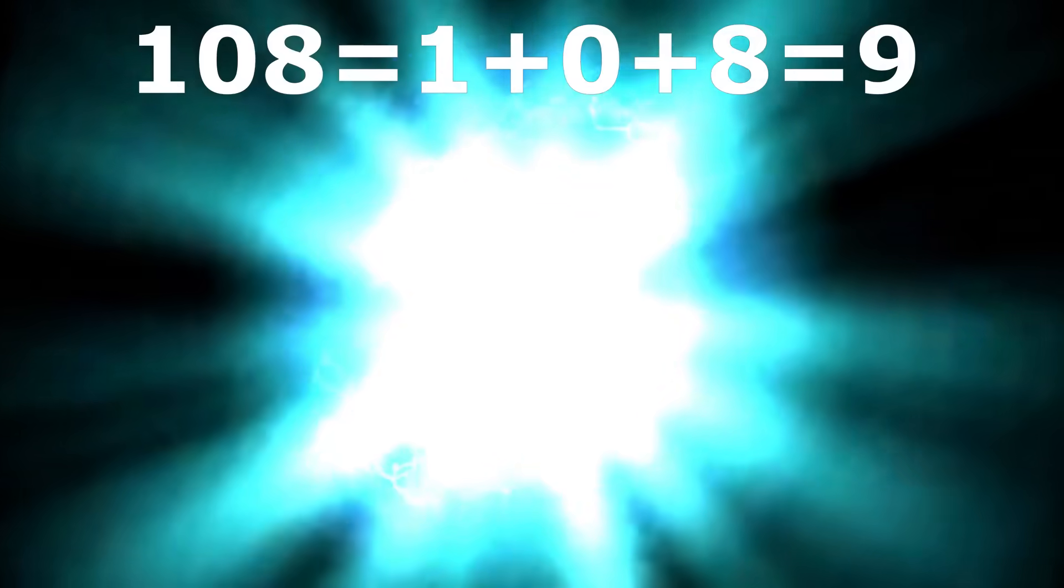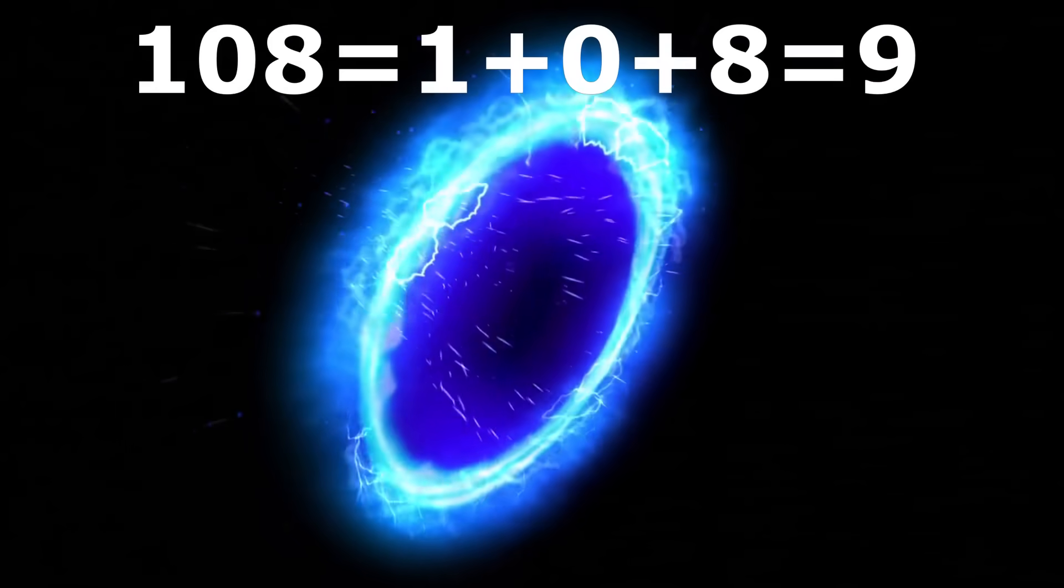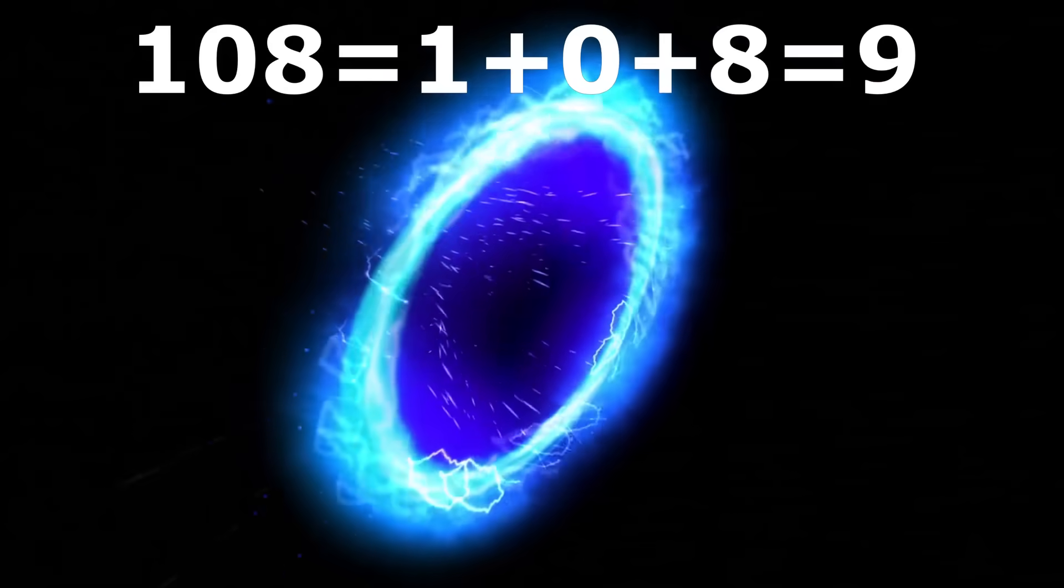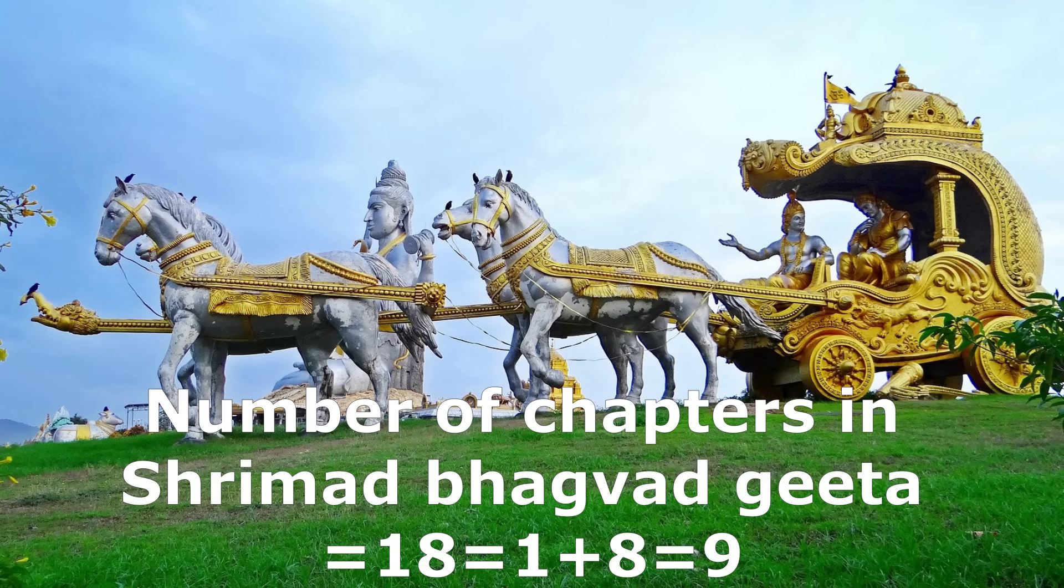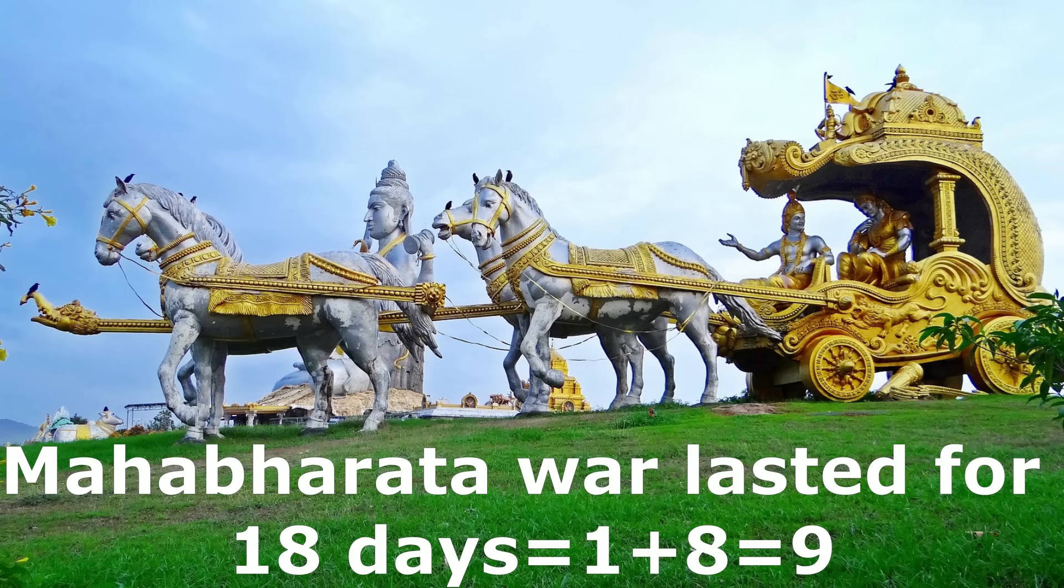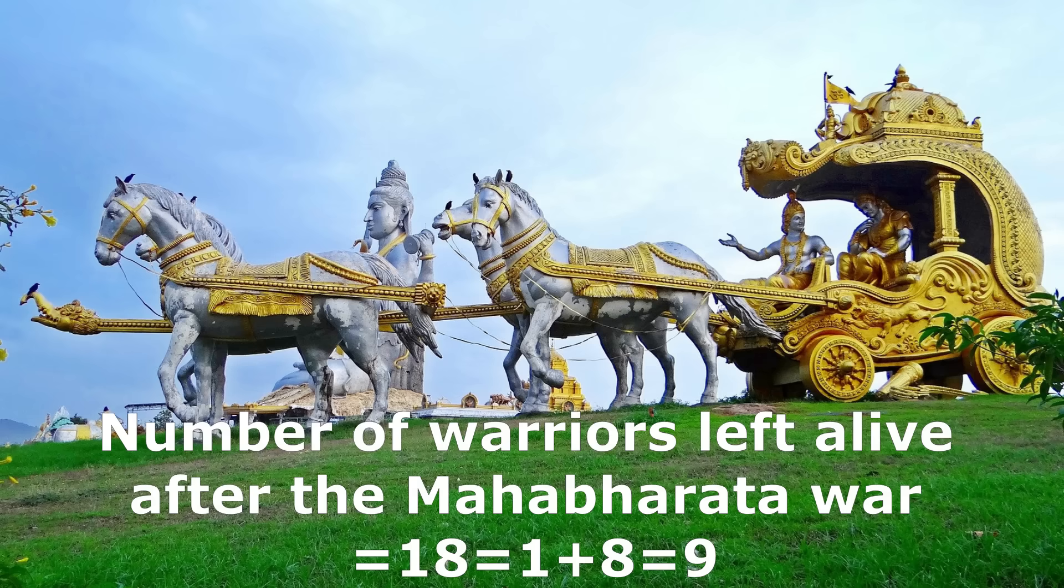On observing the shape of the Om symbol, it appears to be a combination of 3, 6, and 9 with number 9 at the top of 3 and 6. A sacred number in Hinduism, 108, reduces to 9. Number of chapters in Srimad Bhagavad Gita is 18. Mahabharata war lasted for 18 days. Number of warriors left alive after the Mahabharata war was 18.